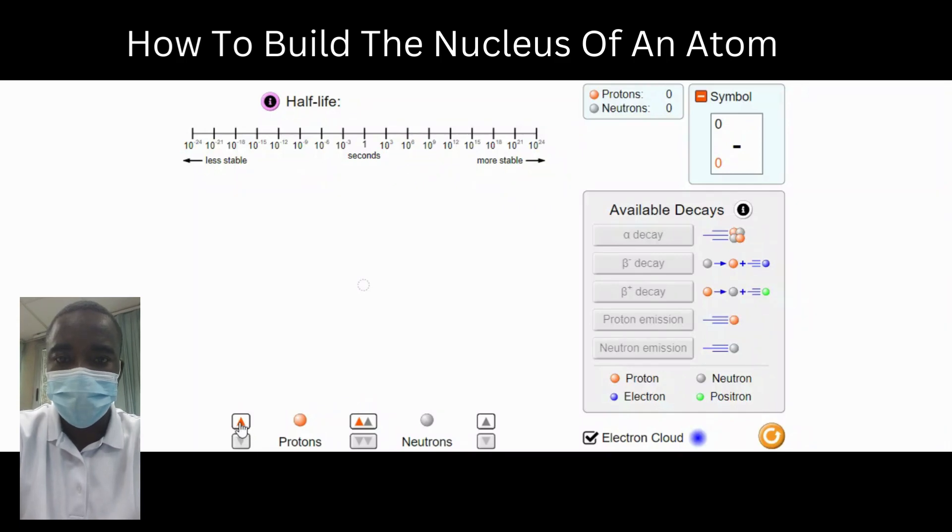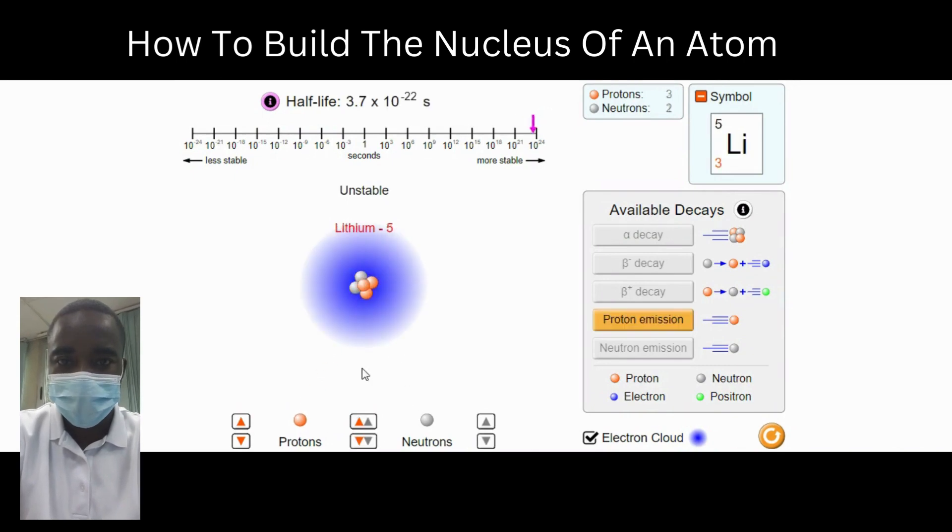In this virtual simulation, we shall be learning how to build a nucleus of an atom. As we know, atoms are composed of protons and neutrons in their nucleus, with electrons orbiting around this nucleus.